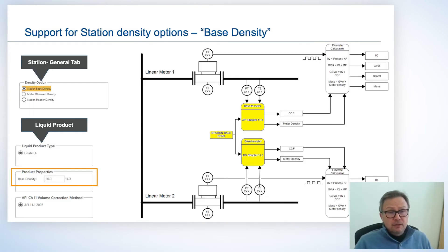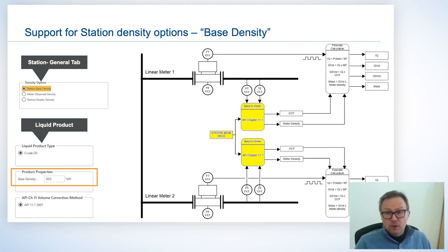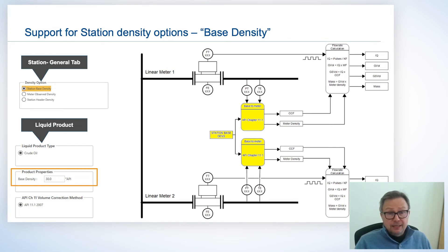Station base density means we have a user-entered station base density. It might get updated periodically by SCADA or manually, but we start with a base density. We then use the API Chapter 11 calculations to calculate what the meter density is — the density of the oil at meter pressure and temperature.